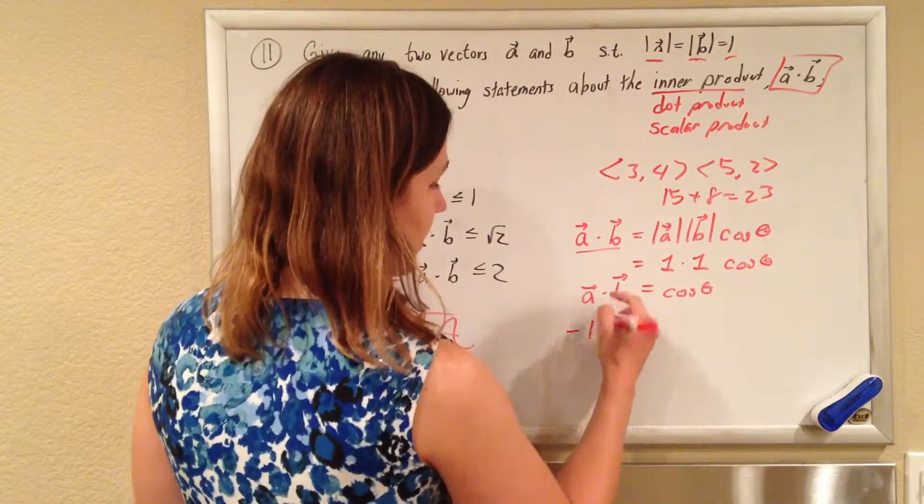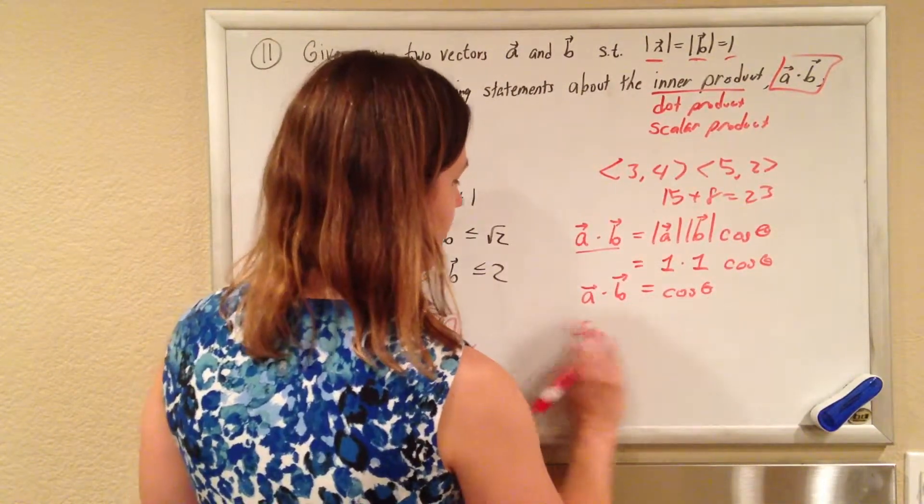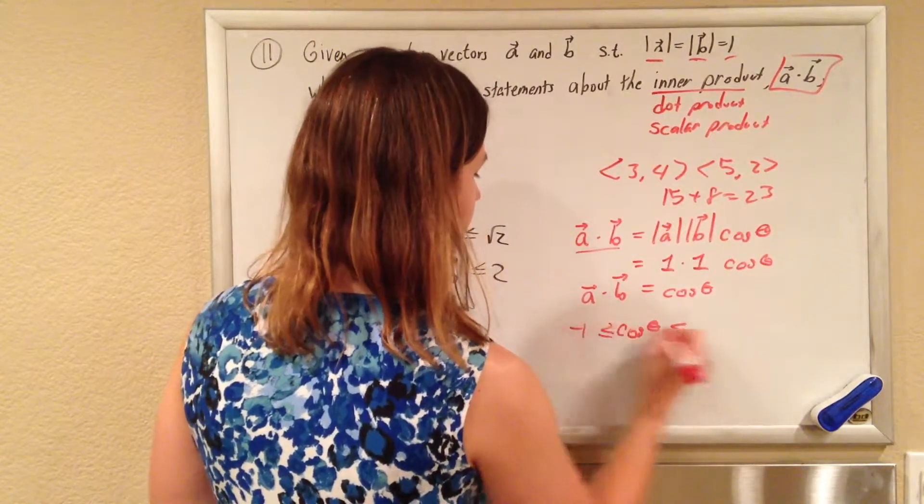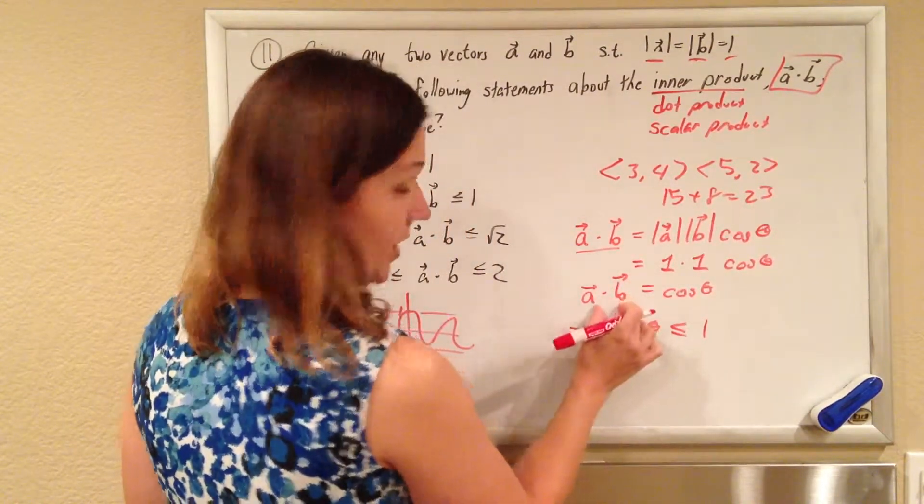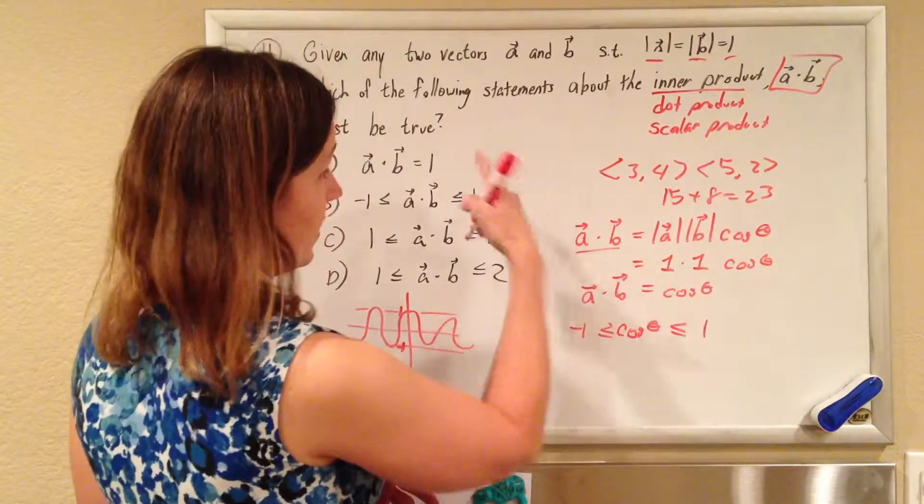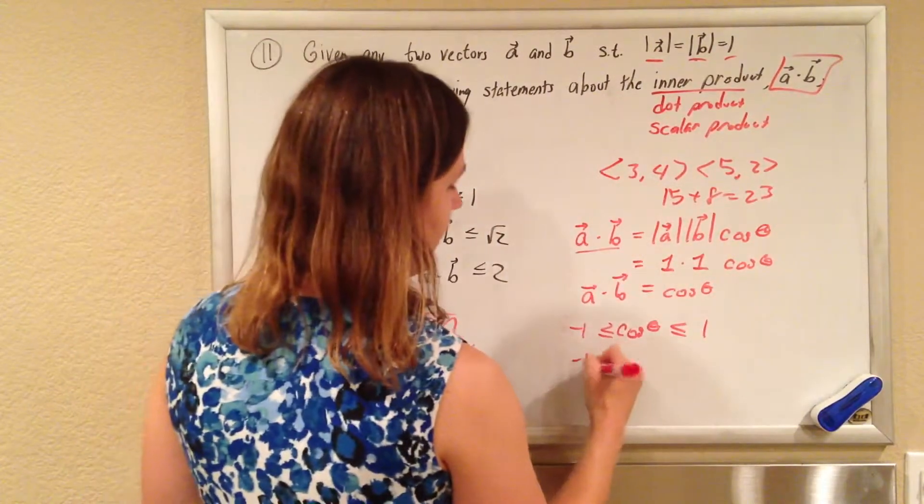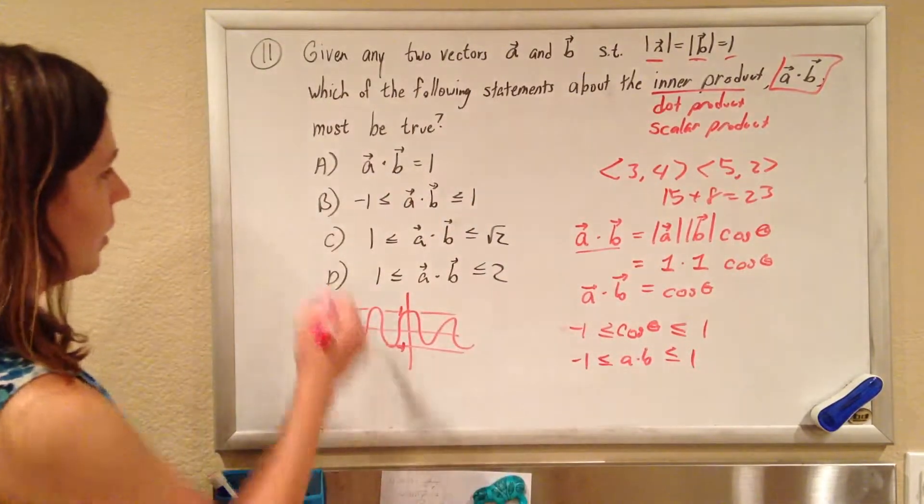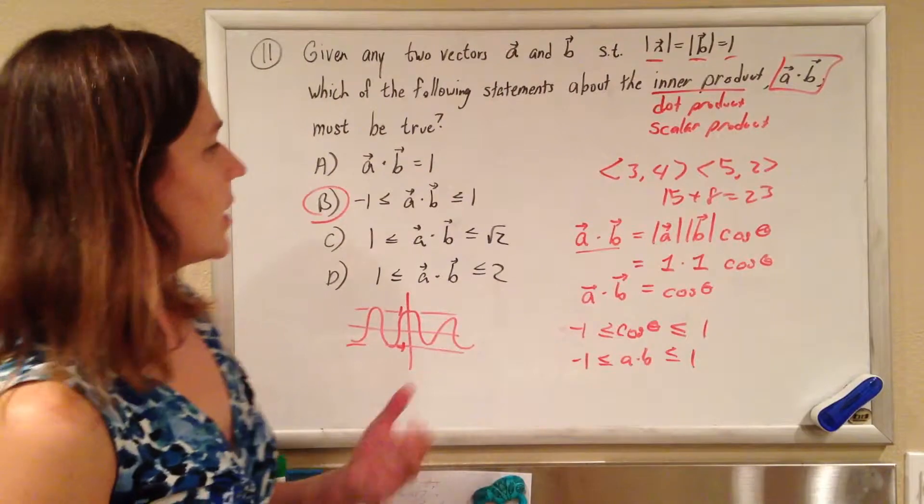So our answer is that since cosine has to be between negative one and one, and A dot B is the same thing as the cosine of theta in this case, that A dot B has to be between negative one and one, and that's what we see right there.